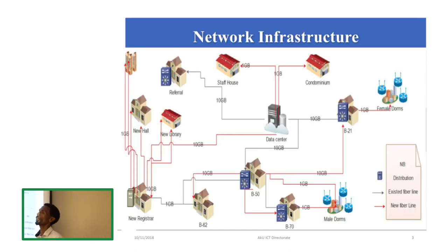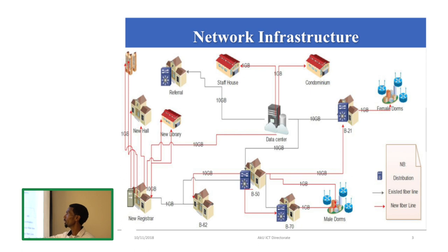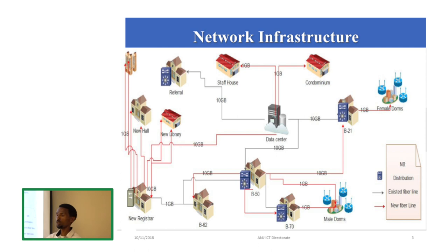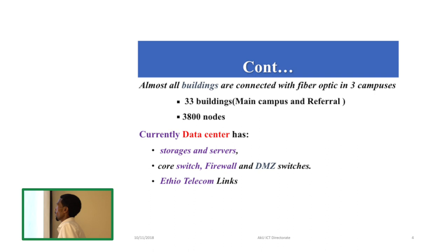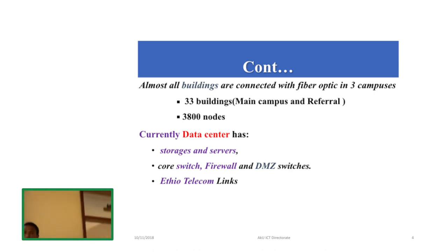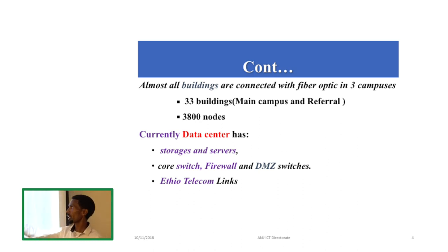Looking at the network infrastructure, this shows the fiber optic infrastructure of our campus. The red lines represent future fiber expansions, while the black lines show the existing fiber of the main campus. All three campuses are connected with fiber optic — the main campus as well as the referral campus. In the main campus and the referral campus, about 33 buildings are already connected with fiber optic.